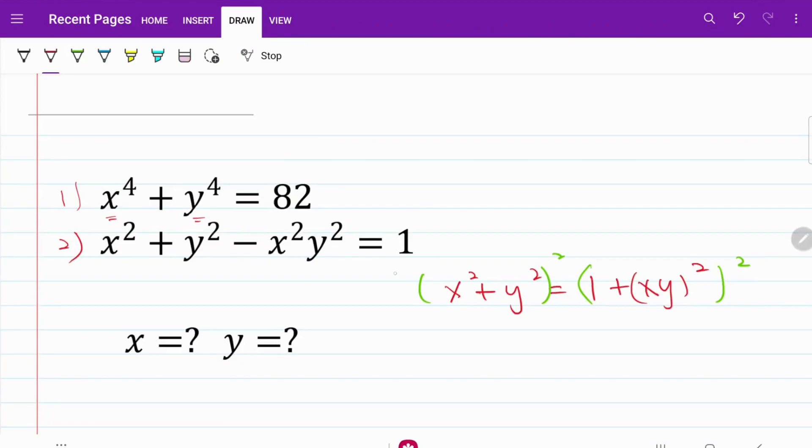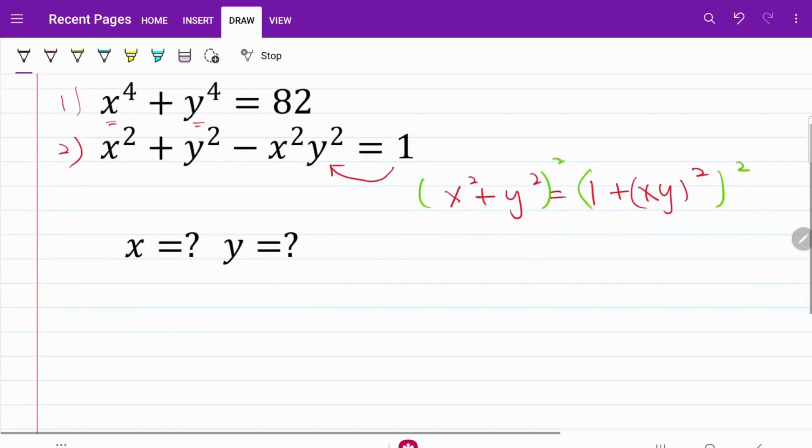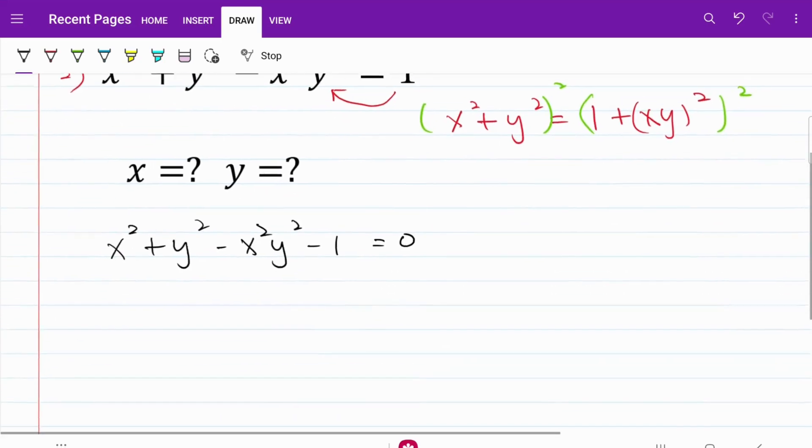My next approach was to bring 1 to the left-hand side on equation 2. So when I do that, this is what I have. I have x squared plus y squared minus x squared y squared minus 1 is equal to 0. We can do some rearranging on the left-hand side to come up with a factorization.